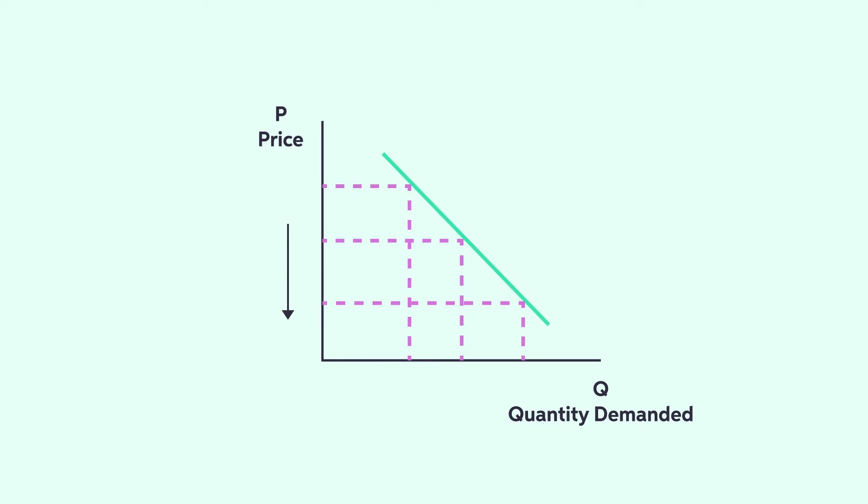As the price comes down, the quantity demanded goes up, and vice versa. This downward sloping line is called the demand curve.